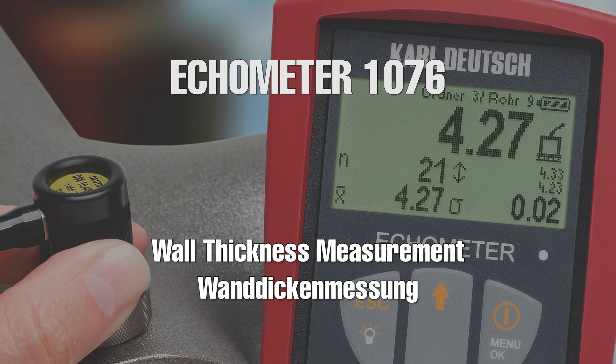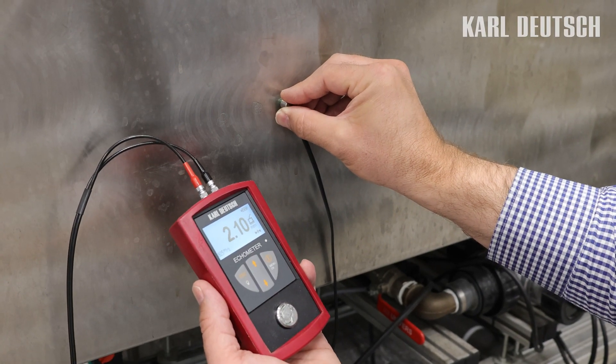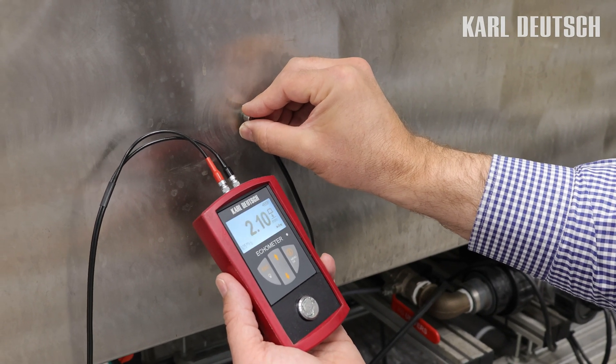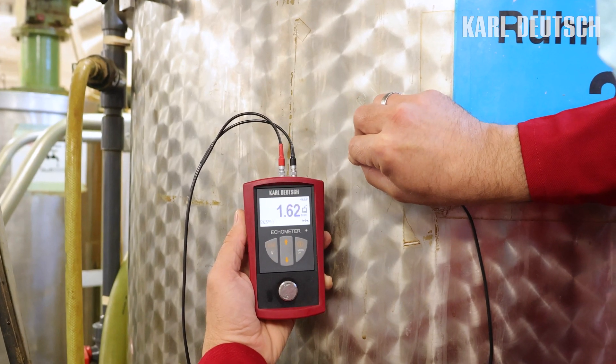Welcome to Karl Deutsch. The ECHOMETER 1076 is a measuring device for determining wall thickness. It is used whenever a mechanical measurement with a caliper gauge is not possible because only one side of the wall is accessible, such as on pipes and vessels.